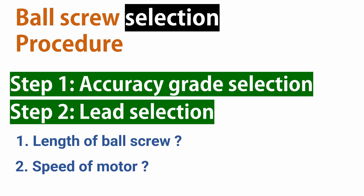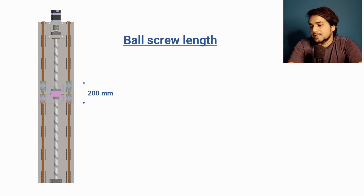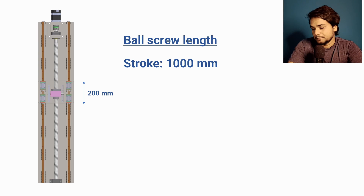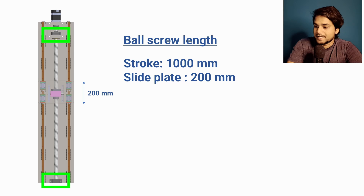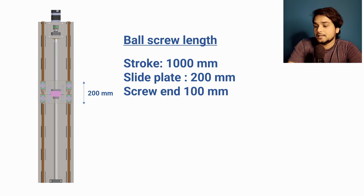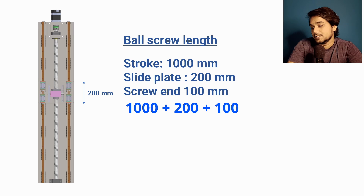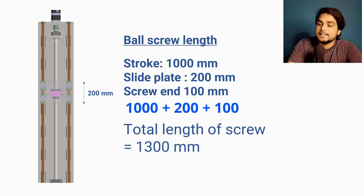Now we are on the second step: selection of the lead of the ball screw. For lead selection, we first calculate two things — the approximate length of the screw and the speed of the motor. The required stroke length is 1000 mm, the sliding plate width is 200 mm, and we add about 100 mm extra for the end bearing blocks, giving a total screw length of 1000 + 200 + 100 = 1300 mm.